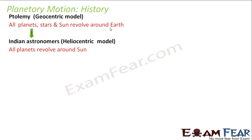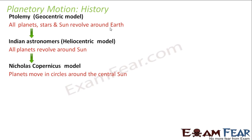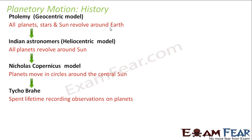After some time, a group of Indian astronomers proposed the heliocentric model, which said that all planets revolve around the sun — the sun, not the earth, is at the center. A few years later, Nicholas Copernicus gave the Copernican model, in which he said that planets move in circles around the central sun.